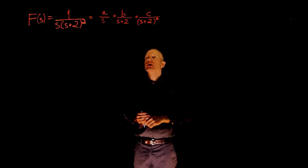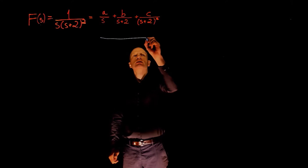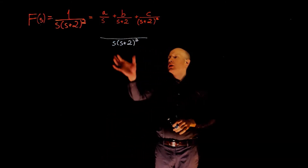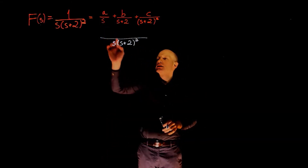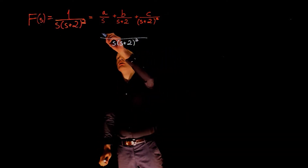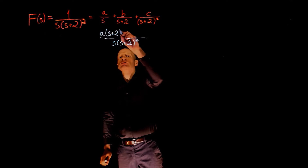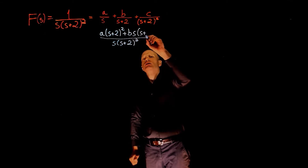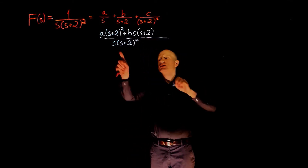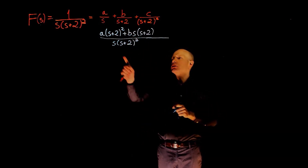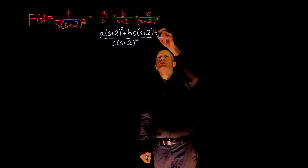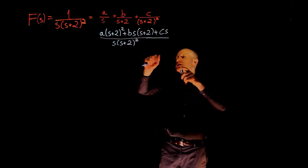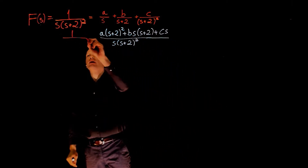Now let's find the common denominator for this expression. The common denominator is s times (s+2)². Multiplying through: s(s+2)² divided by s gives (s+2)² times A; for B, we have B times s times (s+2); and (s+2)² divided by (s+2) is (s+2) times s; and for C we simply have C times s. Our job now is to find A, B, and C, knowing this expression equals the original f(s).